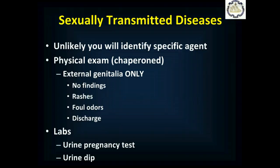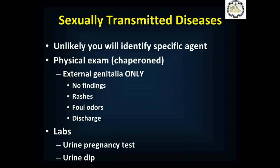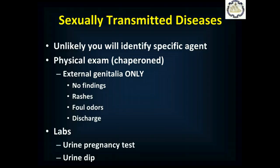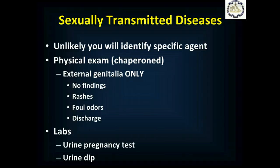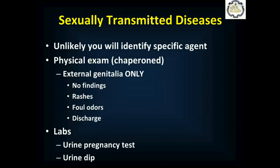It's pretty unlikely that you're going to figure out exactly what the specific agent is, unless there's a rash or an ulcer associated with it — then a medical textbook can help you figure it out. Your physical exam is going to be chaperoned, external genitalia only, looking at the penis and the outside of the vagina. You may find nothing at all, but you may find rashes or ulcers, foul odors, or discharge from the end of the penis or vagina. You're not going to sample these with swabs, but if you can describe them, that can be very helpful to medical control.